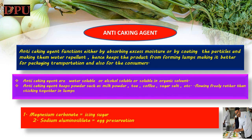Some anti-caking agents are soluble in water; others are soluble in alcohol or other organic solvents. Anti-caking agents keep powders such as milk powder, tea, coffee, sugar, salt etc. flowing freely rather than sticking together in lumps. There are other products like non-dairy creamers and toppings like parmesan cheese that need to flow freely but coagulate in their natural form — anti-caking agents are used to prevent this. Many anti-caking agents are natural products like bentonite; others are manufactured like silicon dioxide and calcium silicate. Their action is only physical and not chemical; they are generally harmless.